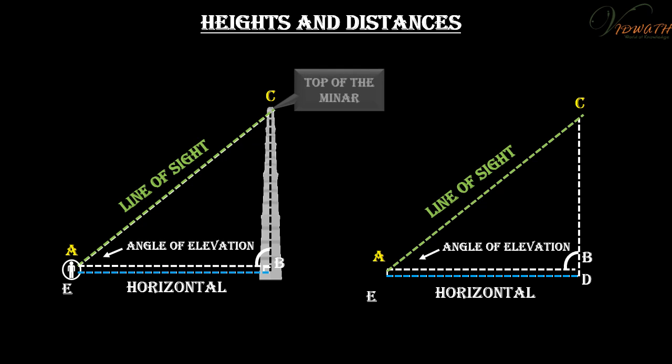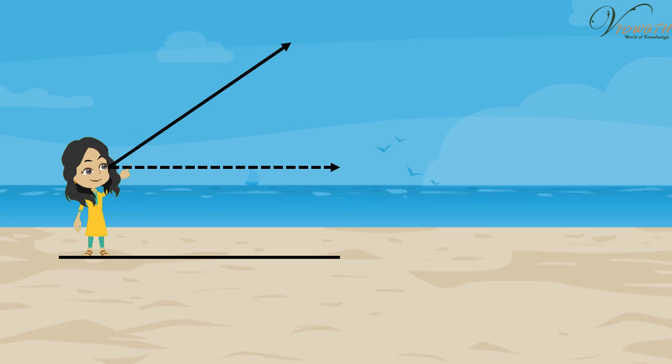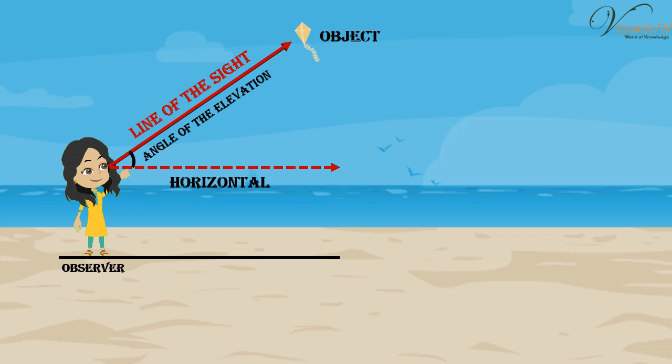Thus, the line of sight is the line drawn from the eye of an observer to the point in the object viewed by the observer. The angle of elevation of the point viewed is the angle formed by the line of sight with the horizontal when the point being viewed is above the horizontal level.